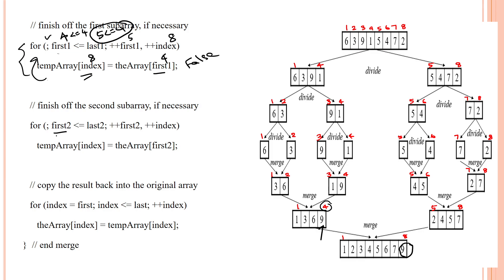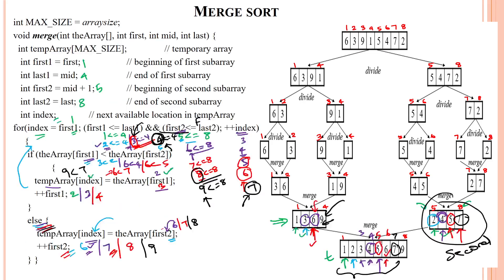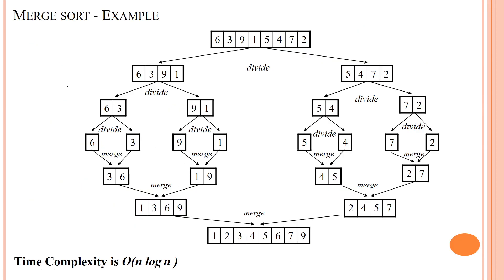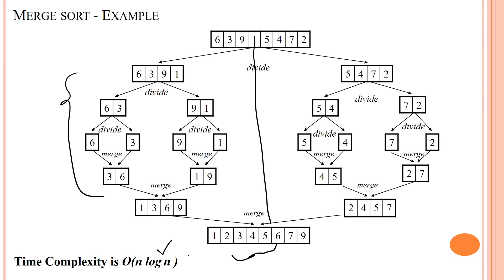We check the remaining second array loop: first index is 9 and 9 less than or equal to 8 is false — so it does not execute. Finally, with first index as 1 and last index as 8, we copy the temporary array elements back into the original array. So the sorted elements 1, 2, 3, 4, 5, 6, 7, 8, 9 are placed in the original array. The time complexity of merge sort is O(n log n).